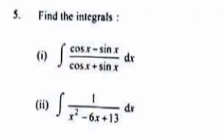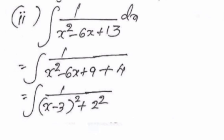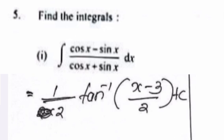Integral of 1/(x² − 6x + 13) dx. Answer: = ∫1/(x² − 6x + 9 + 4) dx = ∫1/((x−3)² + 2²) dx = (1/2) tan inverse((x−3)/2) + C.